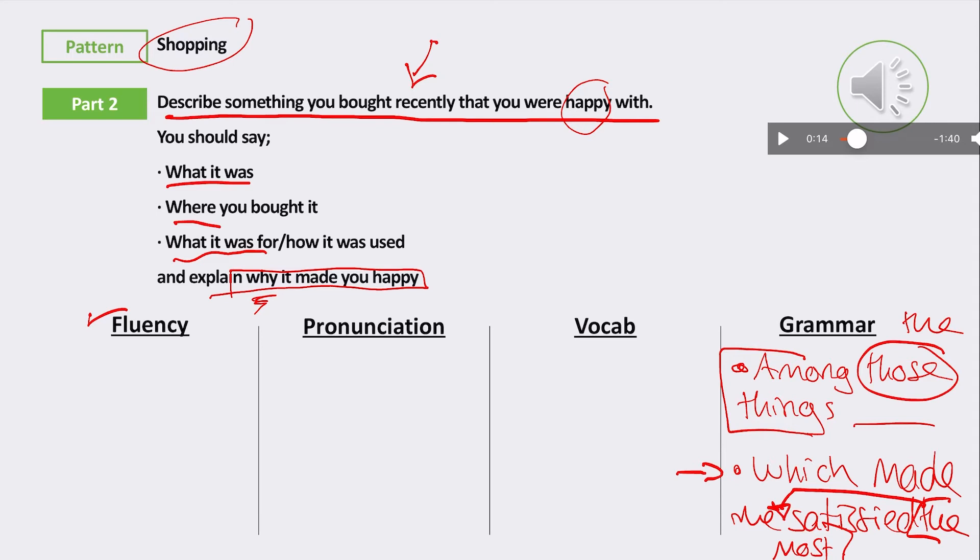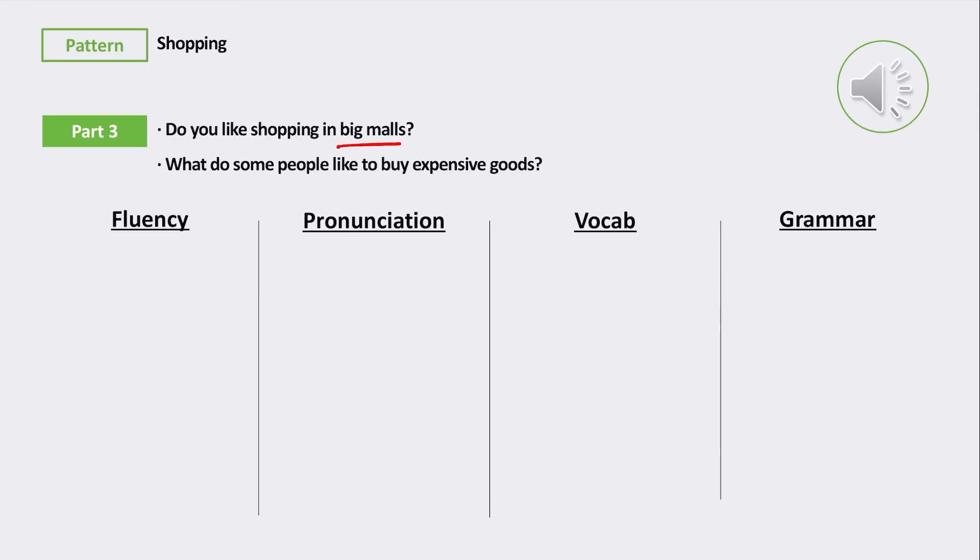Let's take a look at his next answer. Shopping: do you like shopping in big malls, and why do some people like to buy expensive goods? Candidate: I absolutely do love shopping in the big malls because there are so many things to look around and eat. I usually go to shopping center called Metrotown located in Burnaby, Vancouver BC, and I never felt bored inside the mall.